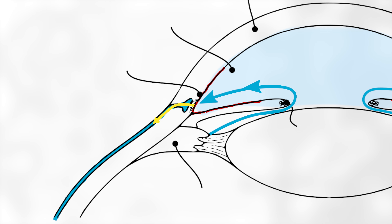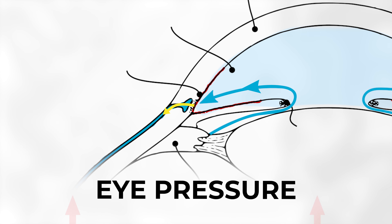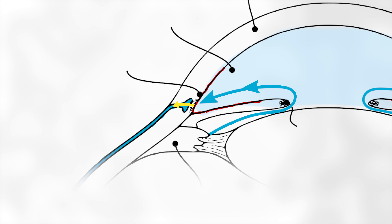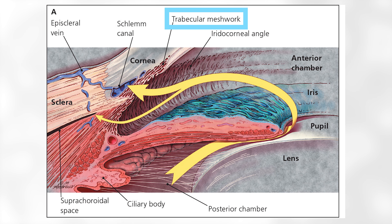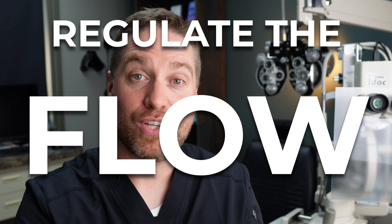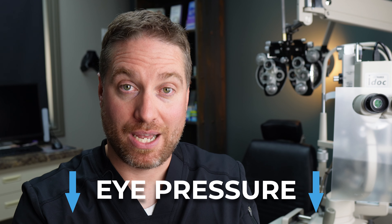With open angle glaucoma, that drain is not going as fast as it should, or you're producing more fluid than you should. This can cause your eye pressure to slightly raise, and that raised eye pressure can push and damage the optic nerve, causing glaucoma. The exact cause for this is poorly understood. The trabecular meshwork may get clogged with pigment or proteins, but either way, the idea is to regulate the flow of aqueous humor in the eye to bring down the eye pressure.